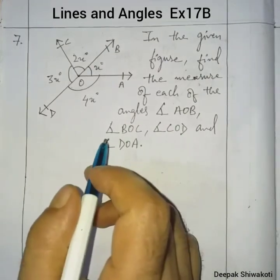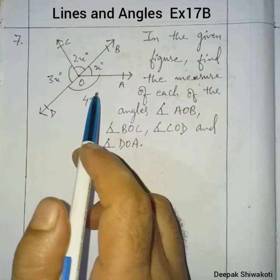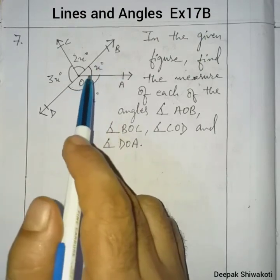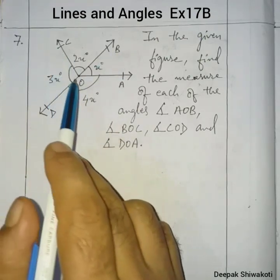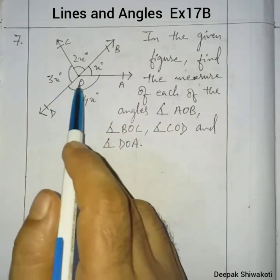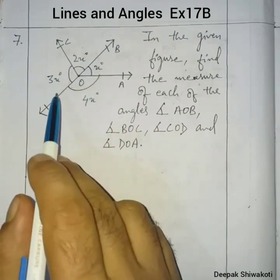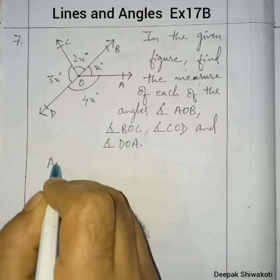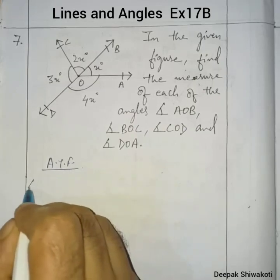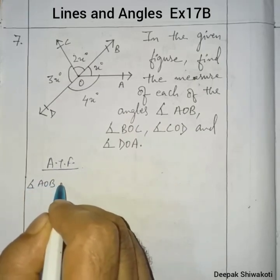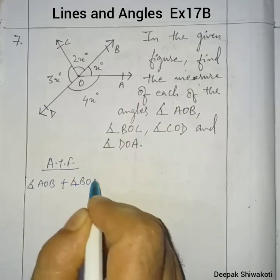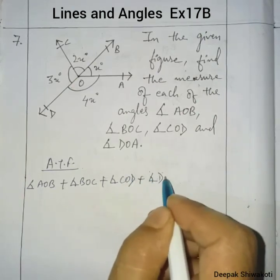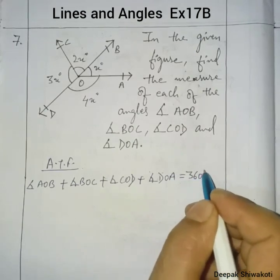Question number 7: in the given figure, find the measure of each angle — AOB, DOC, COD, and DOA. We have to find all these angles. According to the figure, angle AOB plus angle BOC plus angle COD plus angle DOA equals 360 degrees.